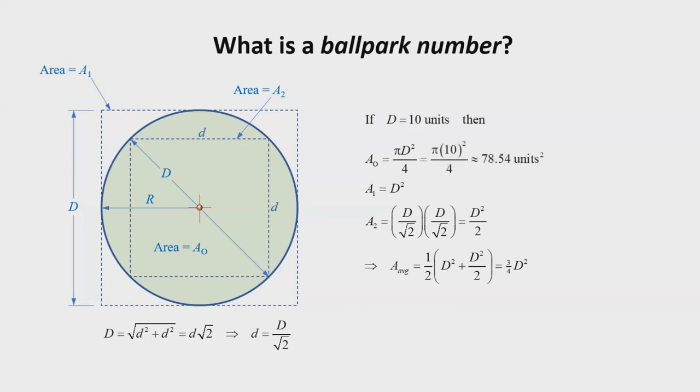The area of the largest square is 100 square units, and the smallest square is 50 square units. And the average area of the two, the approximate area of the circle, is 75 square units. Thus, the area of the circle is 1.047 times larger than the approximation. This corresponds to an approximately 5% error in estimation. The average area represents a ballpark number. It is not equal to the exact number, but it is close. It exemplifies the sort of numbers we expect from less precise assessments.